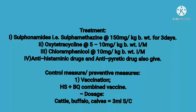Diagnosis of HS: First, by signs and symptoms — mainly edema and swelling at the neck and brisket region with dyspnea. Second, by history of the animal such as long travel or stress. Third, by post-mortem findings: consolidation of lung, edema in the brisket region, and hemorrhage in the thoracic cavity.